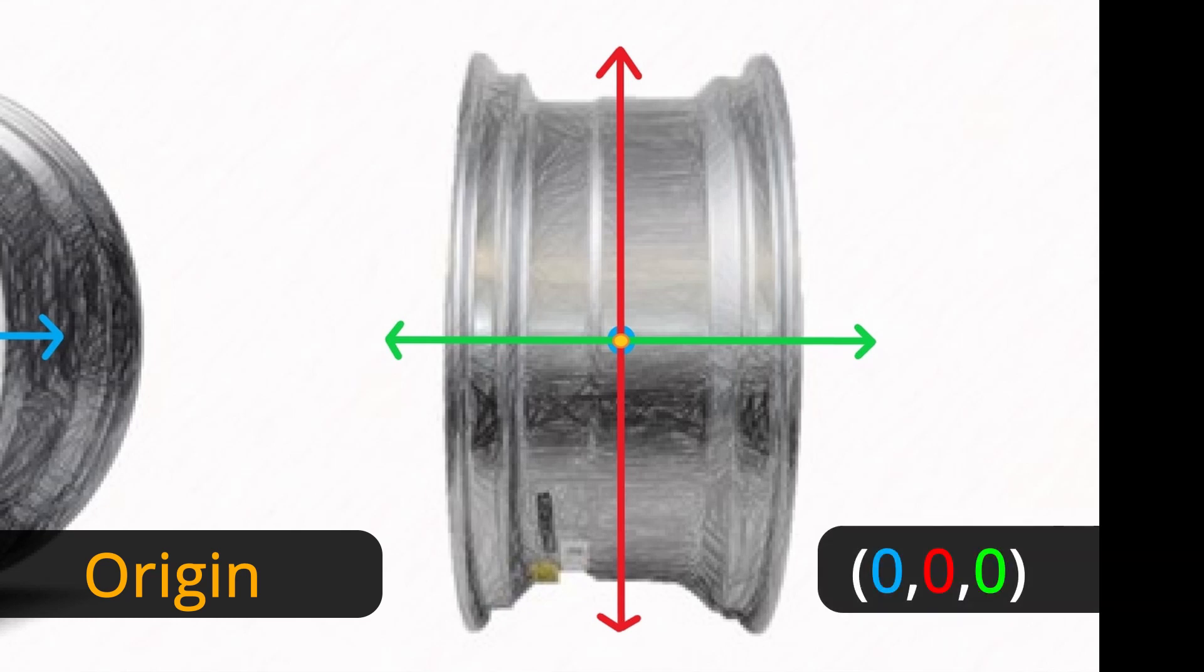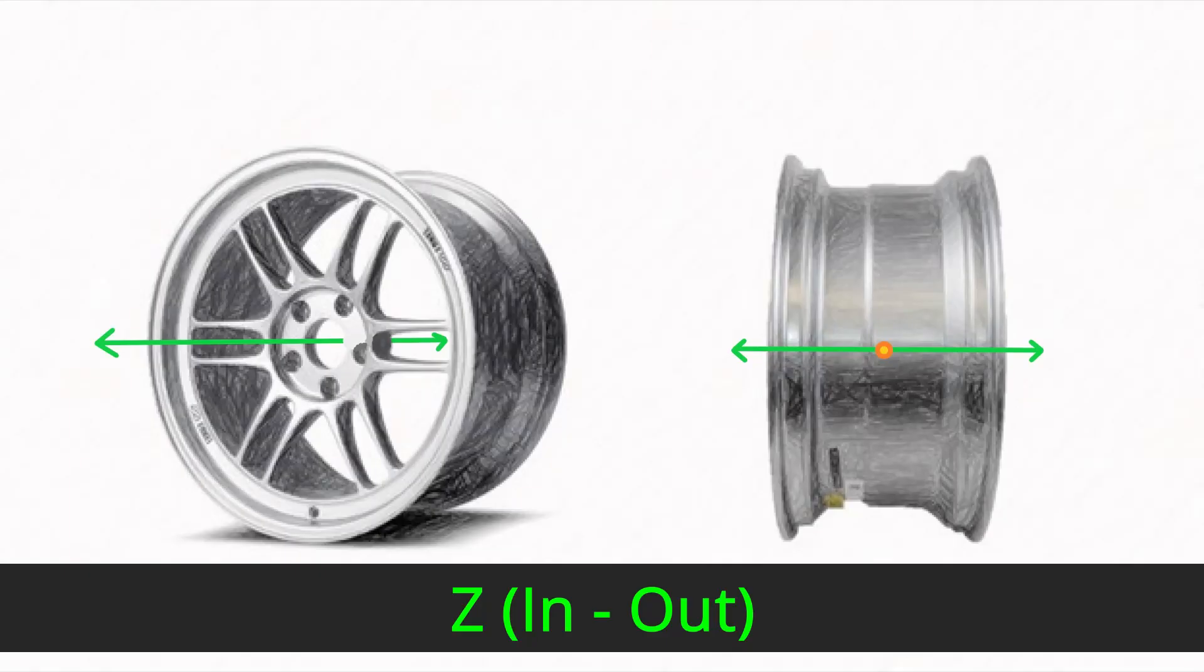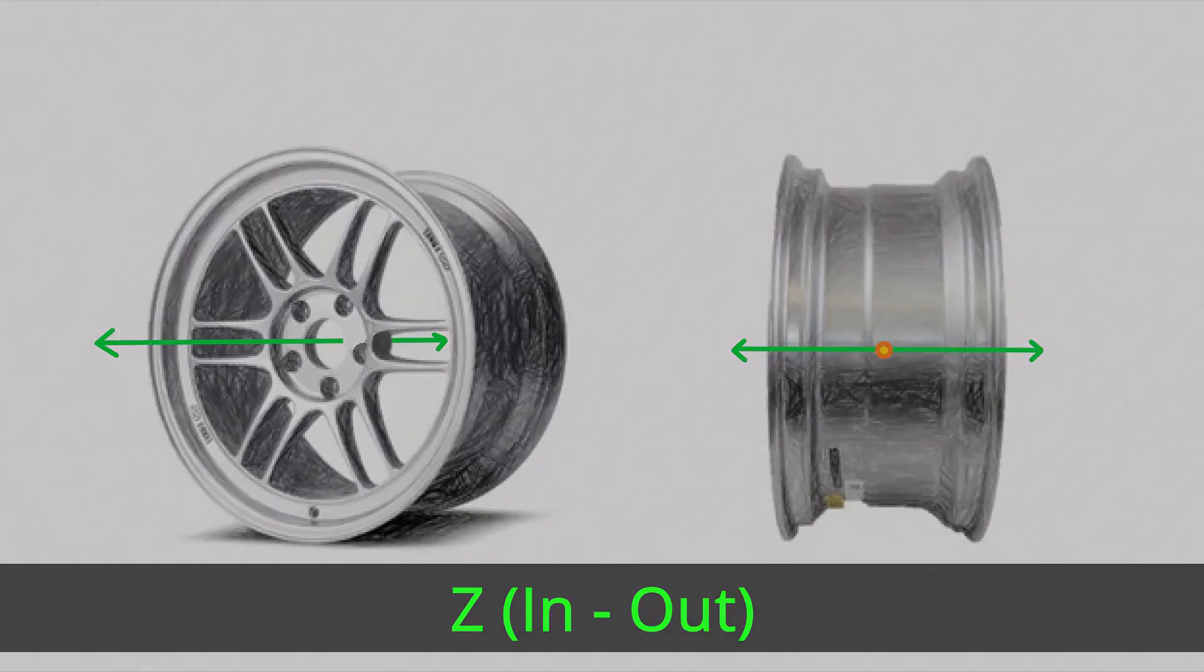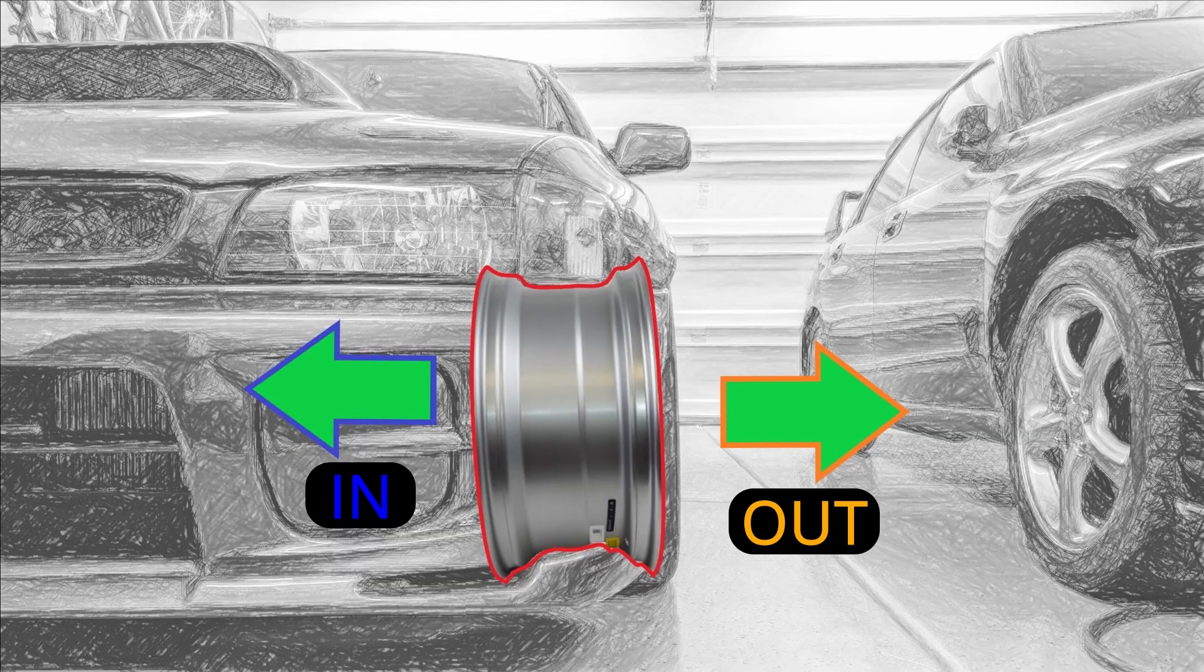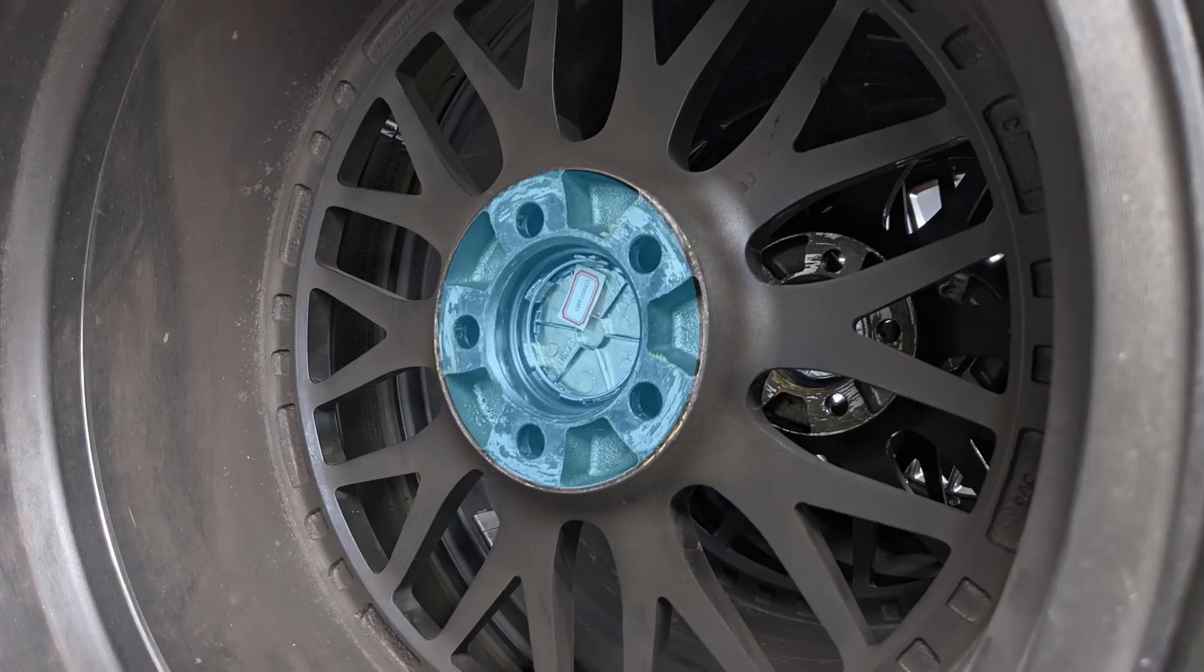We will use the center of the wheel as our origin, meaning the value of X, Y, and Z are all zero. Now for offset, we are only looking at Z, the in and out. In means towards or closer to the car, and out is away from the car.